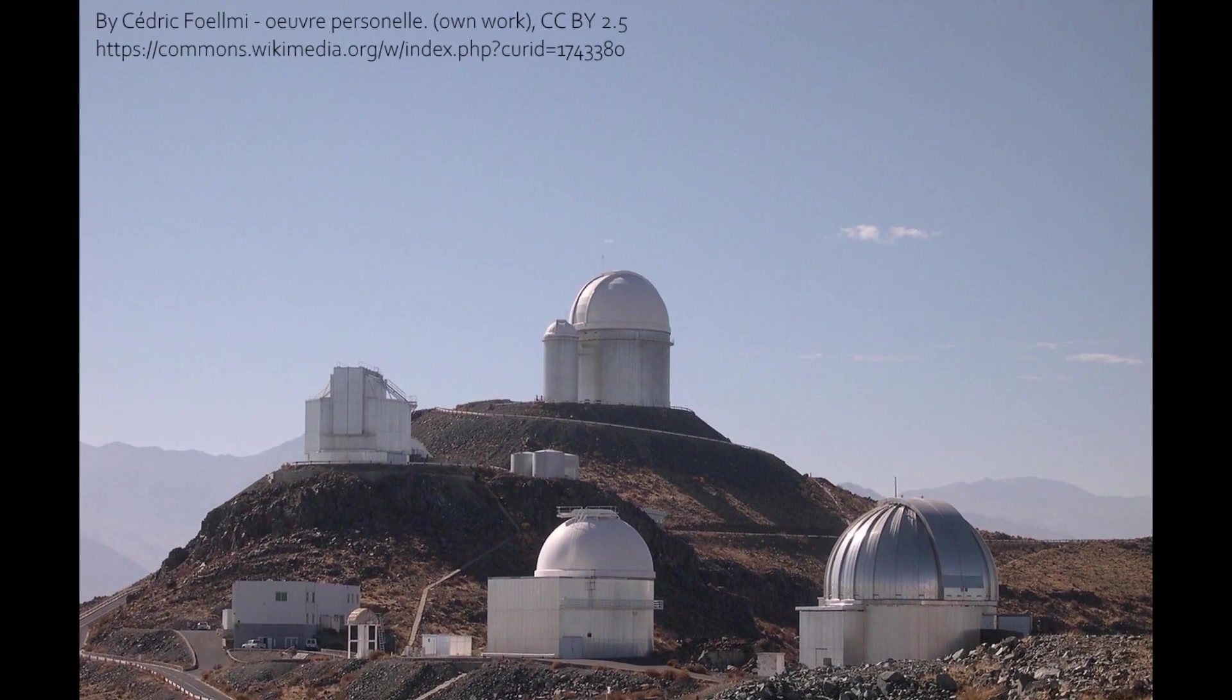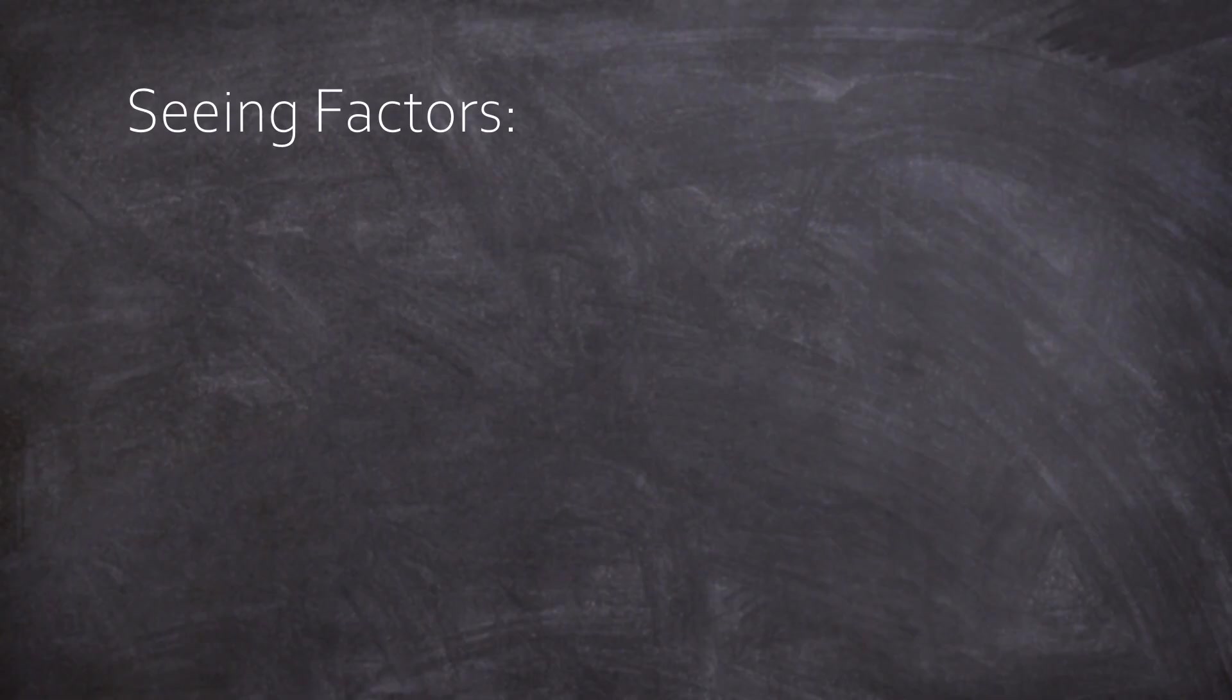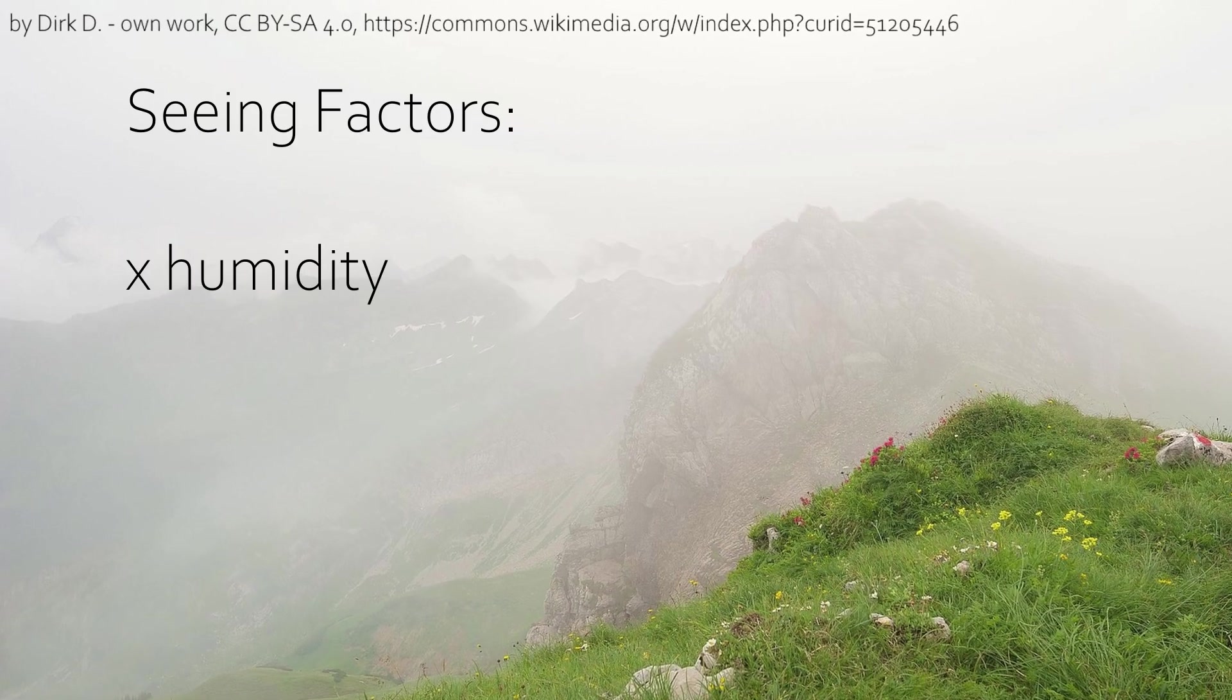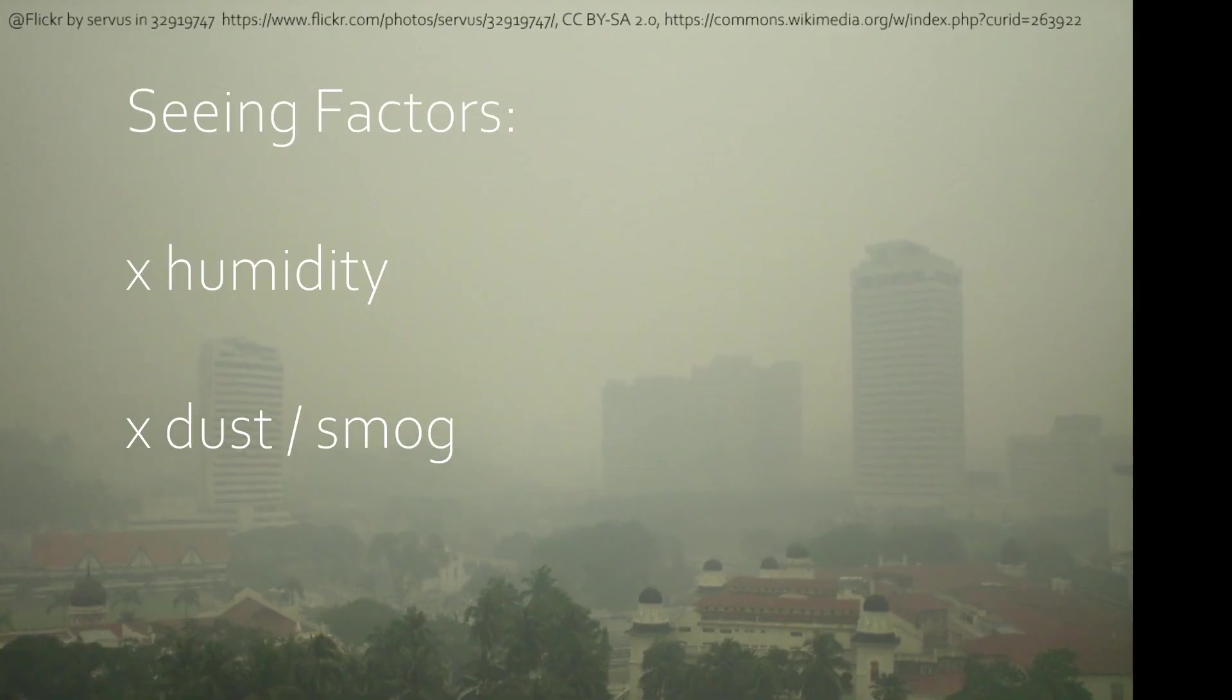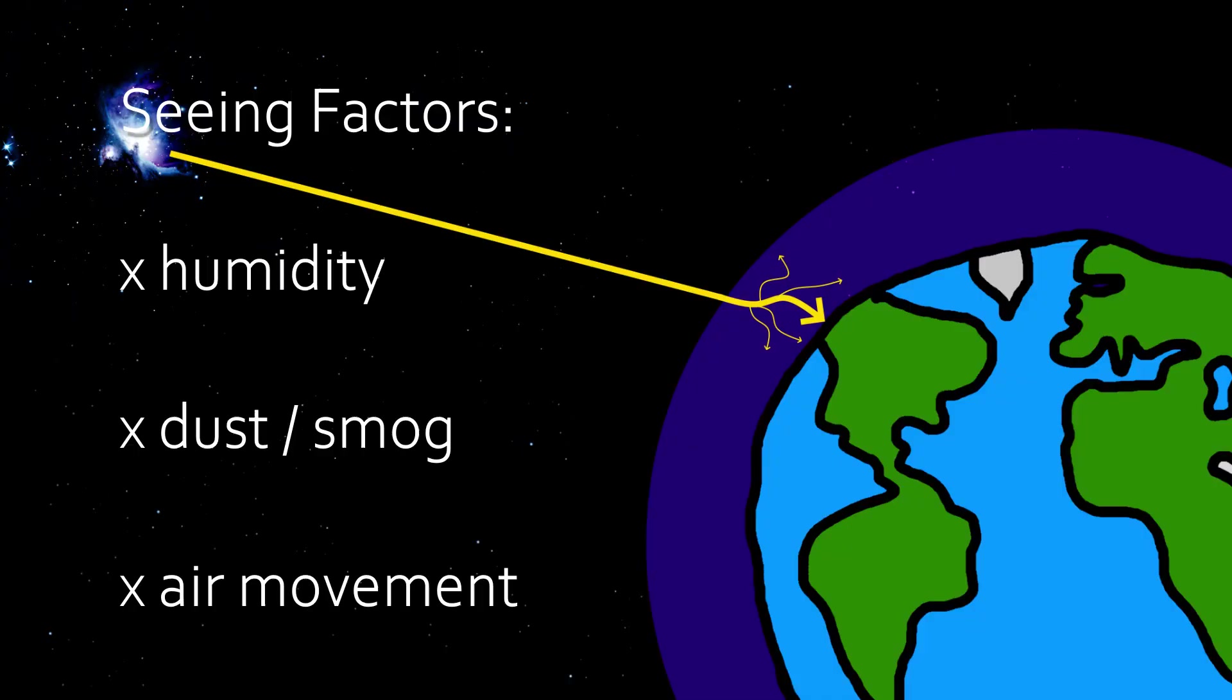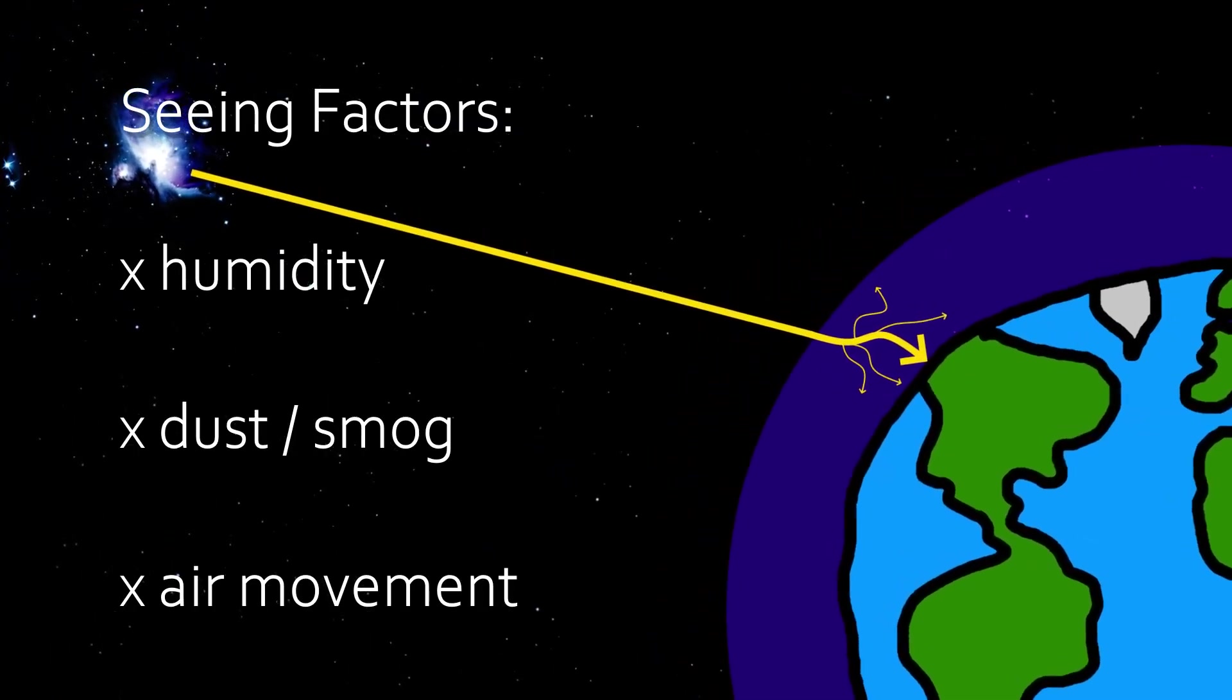But we amateur astronomers are stuck within or beneath. Whatever. There are several factors regarding the quality of the air and so the seeing. First thing is the humidity, so the amount of moisture in the air. Good air is dry as a desert. The less moisture, the less it influences our light path. Second thing is dust and smog. Naturally, little particles floating in midair are not going to help us, so that's bad for seeing.